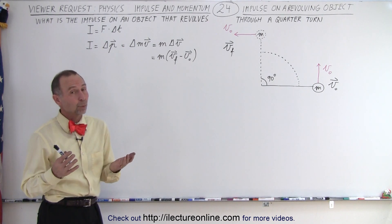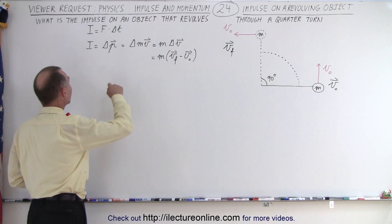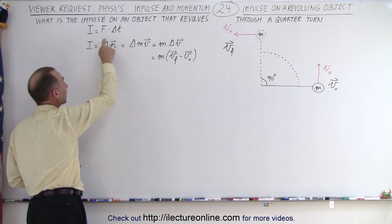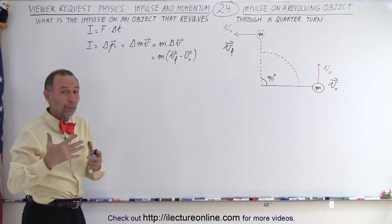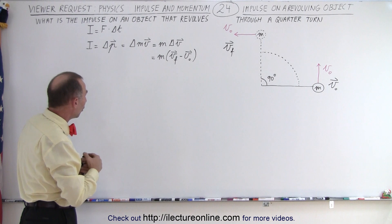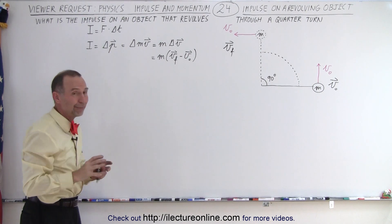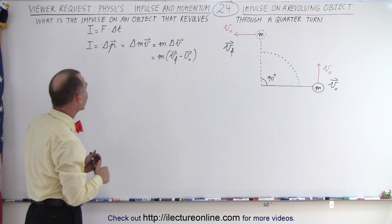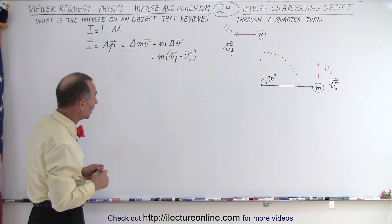So first we need to figure out what an impulse is. The impulse can be defined in two ways. It's equal to the force times the amount of time during which the force acts, and if the force is not constant, of course, that requires an integration, or it can be defined as the change in the momentum. Remember that momentum is indeed a vector quantity, so that means that the impulse is a vector quantity as well.